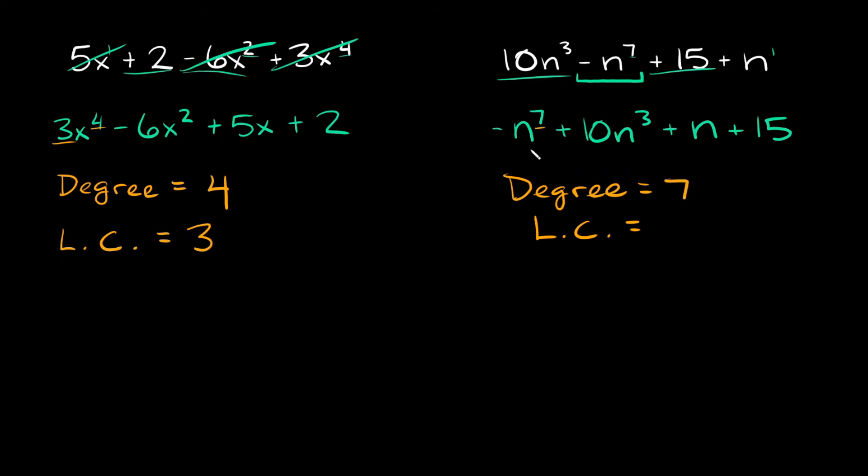And then again the leading coefficient is whatever coefficient you have at the very beginning right here. And as you can see there's no coefficient written. So whenever there's no coefficient written you can always assume that it's a 1. There's basically a hidden 1 right there. And since we have this negative sign right here then it's gonna be negative 1. So the leading coefficient is equal to negative 1.